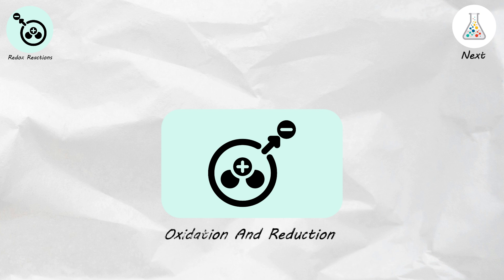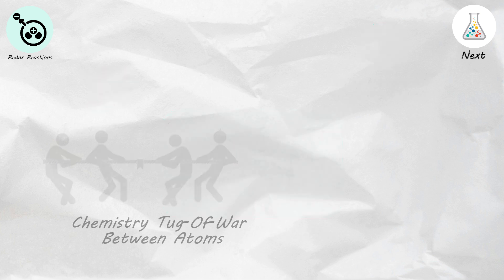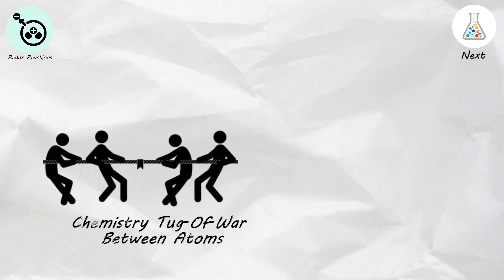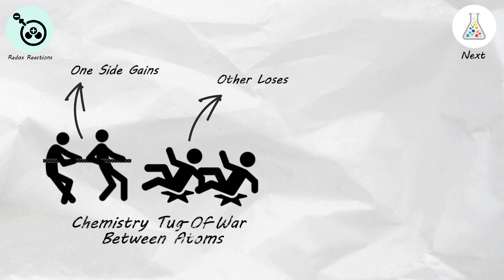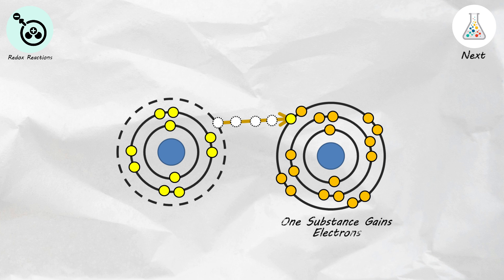Redox reactions. Redox reactions involve both oxidation, adding oxygen, and reduction, adding hydrogen or removing oxygen, simultaneously. Imagine a chemistry tug-of-war between atoms, where one side gains and the other loses. Redox reactions are like this, where one substance gains electrons, reduction, while another loses electrons, oxidation. It's like a game of give-and-take, where electrons are the prize.